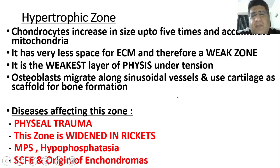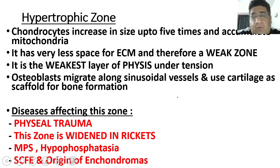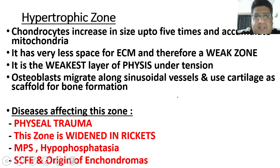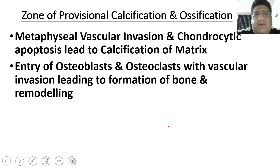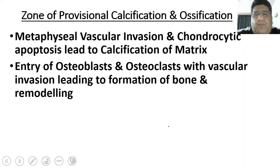Since it is the weakest zone, the most common disease here is trauma. SCFE — slipped capital femoral epiphysis — occurs through this layer. Physeal trauma occurs through this layer. Chondroma originates from this layer. Mucopolysaccharidosis and hypophosphatasia occur here. Also, although not the hallmark finding, this zone is widened in rickets, because the next zone — the zone of provisional calcification — shows no provisional calcification, causing the hypertrophic zone to widen.